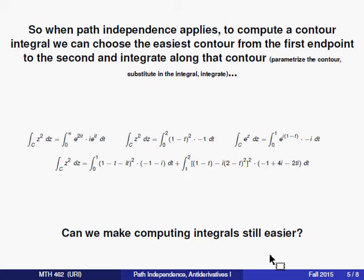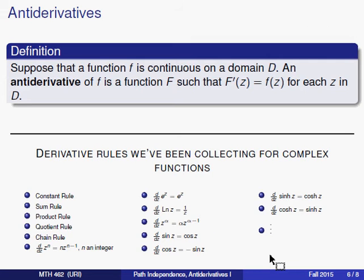Well the answer is yes, and maybe you have an inkling of what's going to happen. We're going to start by defining an antiderivative. Now the definition is pretty similar to what you saw in real variable calculus. We're going to suppose that a function f is continuous on a domain, capital D. An antiderivative of f is a function capital F for which the derivative of capital F is equal to our original function f for each point in that domain.